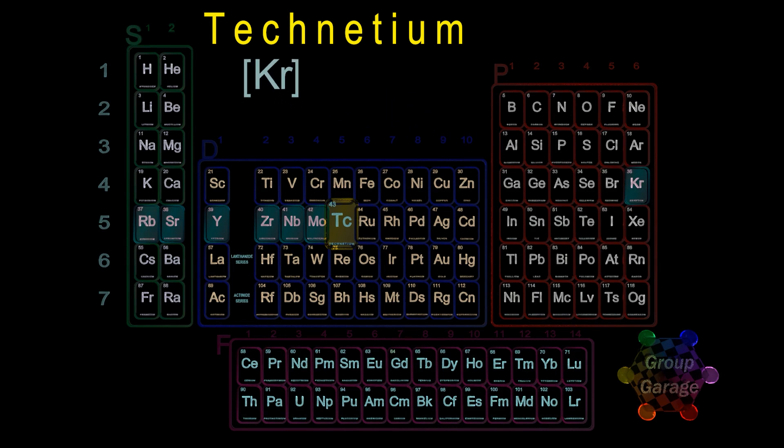In period 5, the two elements rubidium and strontium fill up the S block, so we write the period number 5 followed by the number of electrons in the S subshell, 5s2.